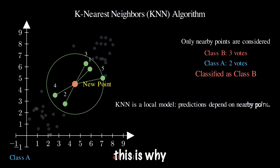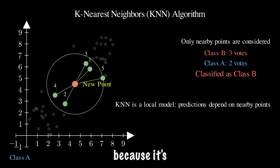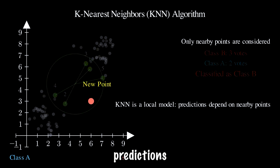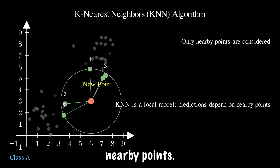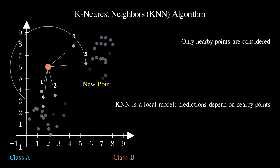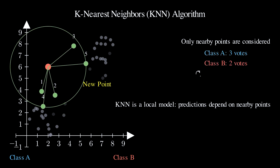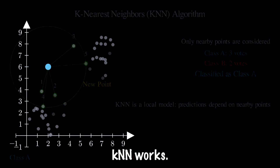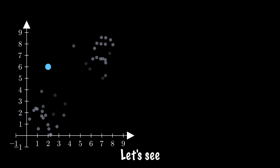So the new point is classified into class B. This is why KNN is a local model — it makes predictions based on nearby points. Now let's see how linear regression works.